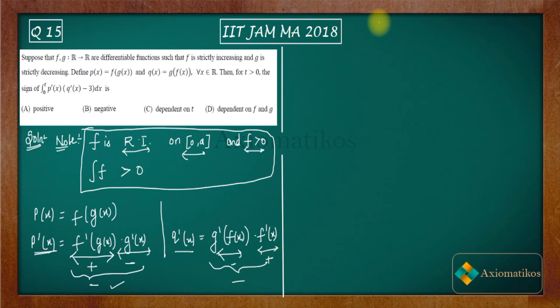So see this thing now that you have 0 to t, where t is some number, a finite number greater than zero. So you have p'(x) · q'(x) - 3. You know that p'(x) is less than zero on [0, t]. This is what you know. Now q'(x) is also less than zero on [0, t].